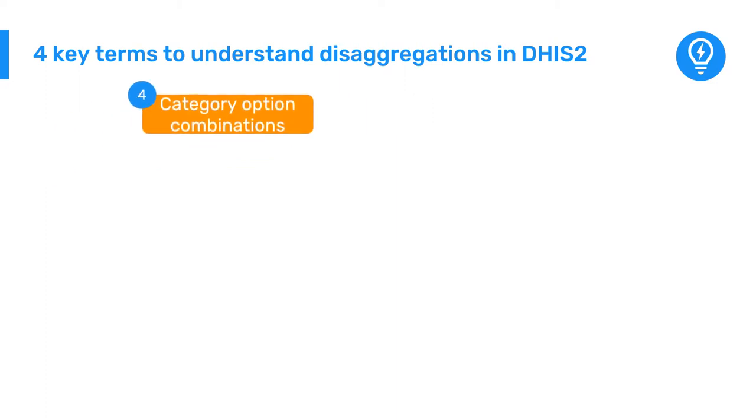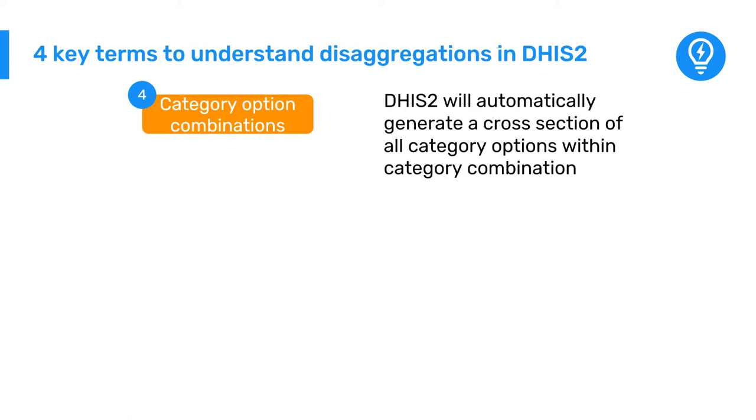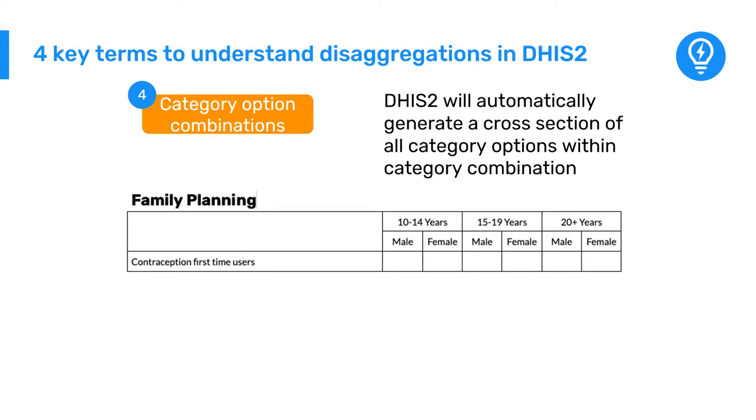Lastly, we have what we refer to as category option combinations. Based on the category combination defined, DHIS2 will automatically generate a cross-section of all the category options contained within the category combination. In our example, the category option combinations will be the individual detail we need to store each of our individual disaggregations of age and sex.